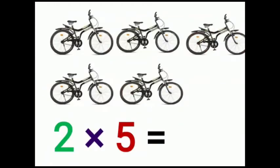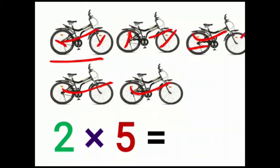Children, these are cycles. There are 2 wheels in 1 cycle. There are 1, 2, 3, 4, 5 cycles. How many wheels do 5 cycles have? 1, 2, 3, 4, 5, 6, 7, 8, 9, 10 wheels.